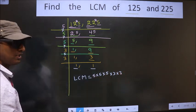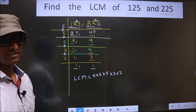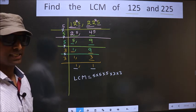You multiply all these numbers. Whatever number you get, that is your LCM. So let us multiply.